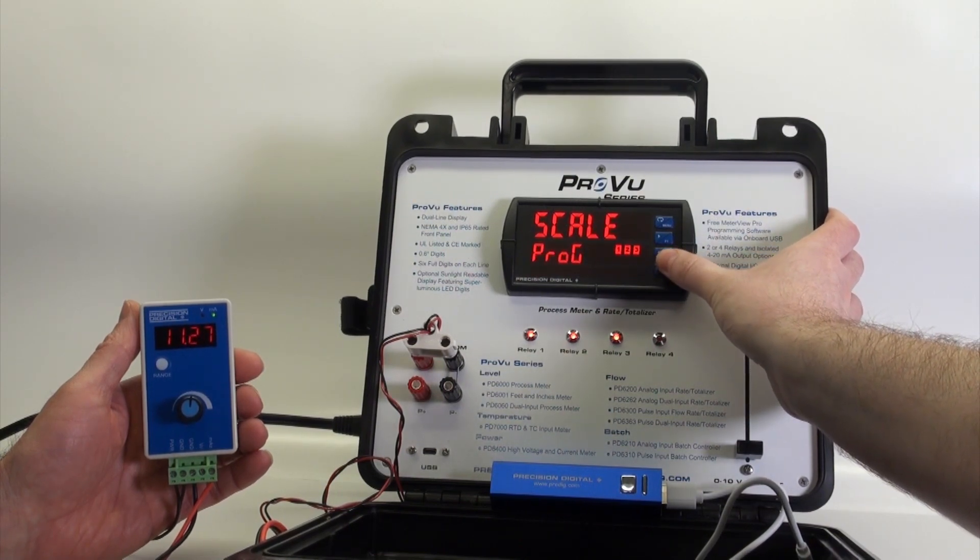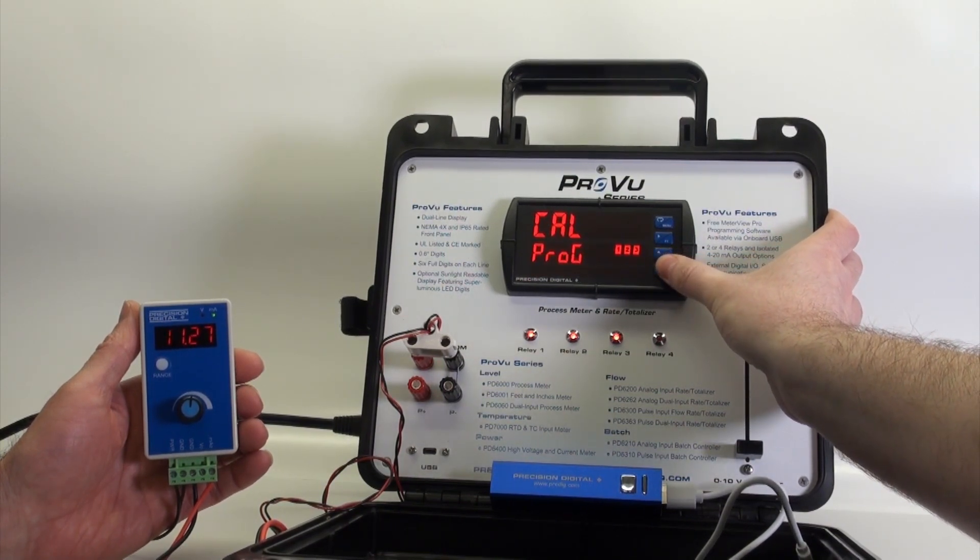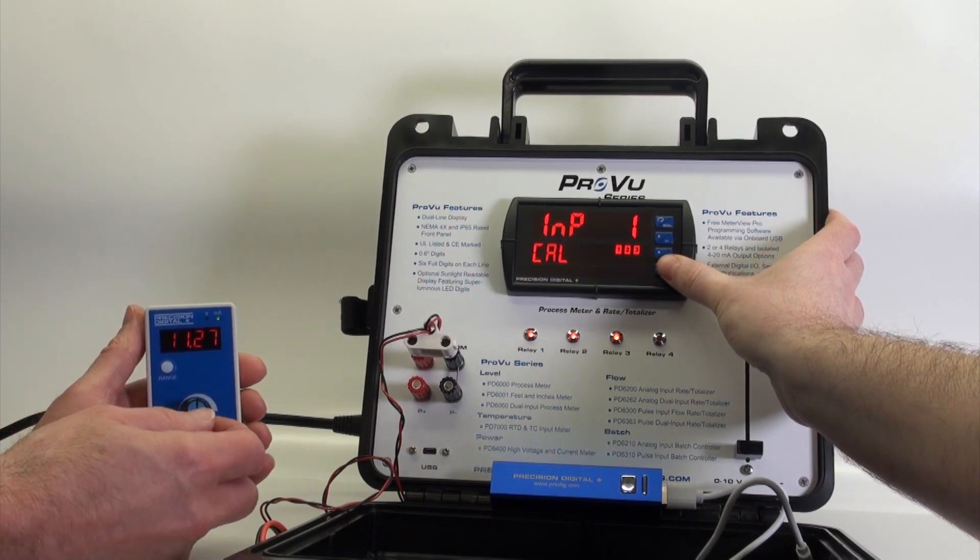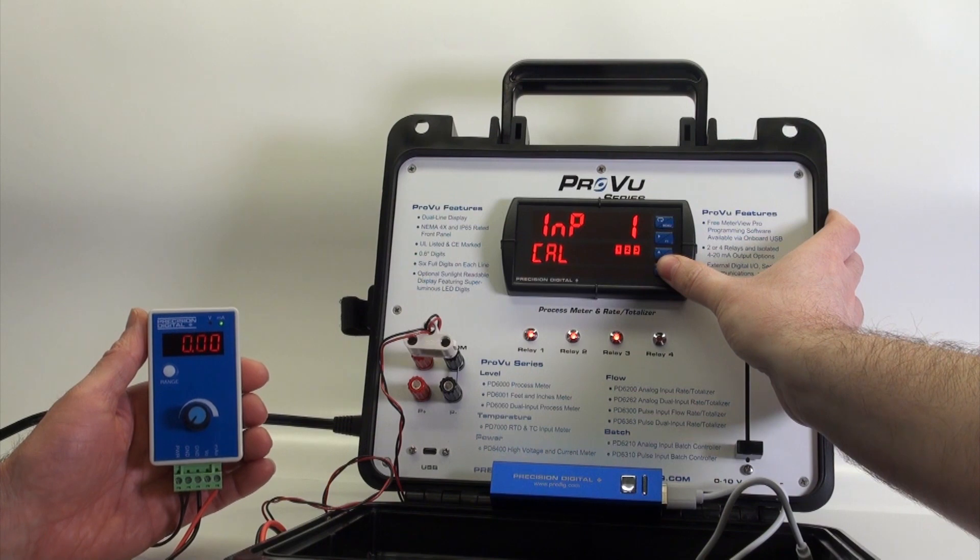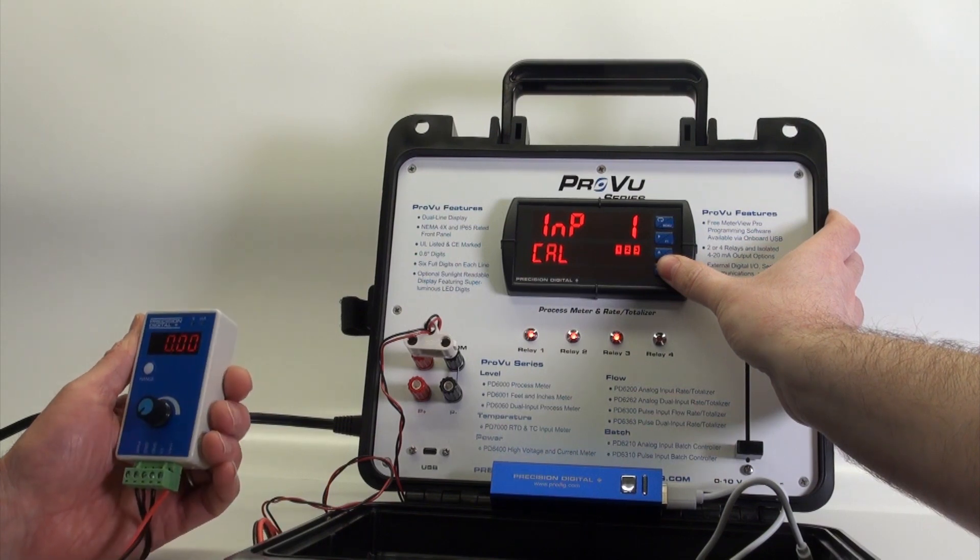We'll go to the internal calibration feature, and now the meter is asking us for input one, so all we have to do is dial the pot down to 4 milliamps.